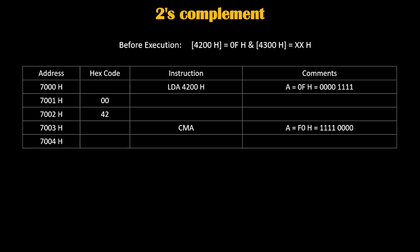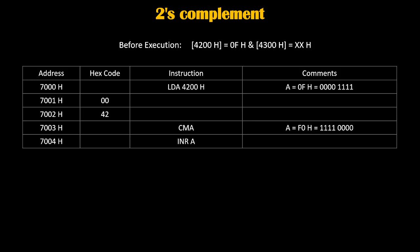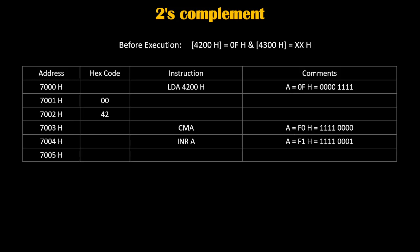On 7004h we write INRA. INRA simply increments the accumulator by 1. We do this because to get the 2's complement from the 1's complement, we need to add 1 to it. After CMA we got the 1's complement, and after INRA we are taking the 2's complement — because 1's complement plus 1 gives 2's complement. So f0h plus 1 gives f1h, and the new accumulator value becomes f1h. INRA is also a 1-byte instruction.